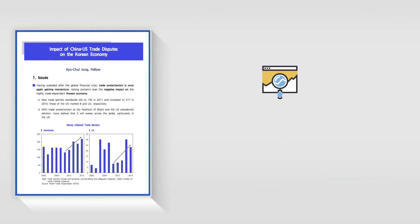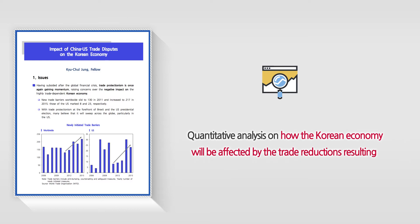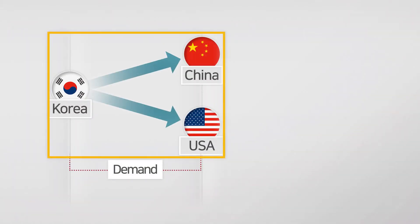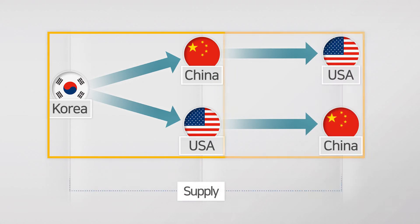Accordingly, this study quantitatively analyzes how the Korean economy will be affected by the resulting trade reductions in terms of supply and demand. For demand, an examination was conducted on Korea's intermediate and final goods that are exported to China and the U.S. for domestic demand. While for supply, the examination concentrated on the global supply chain through which intermediate goods are exported to the U.S. or China, and then processed locally and re-exported to either country.